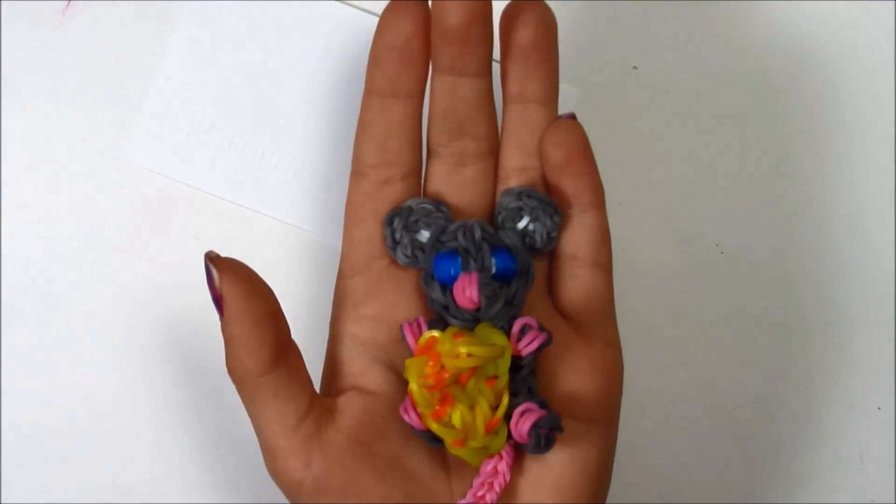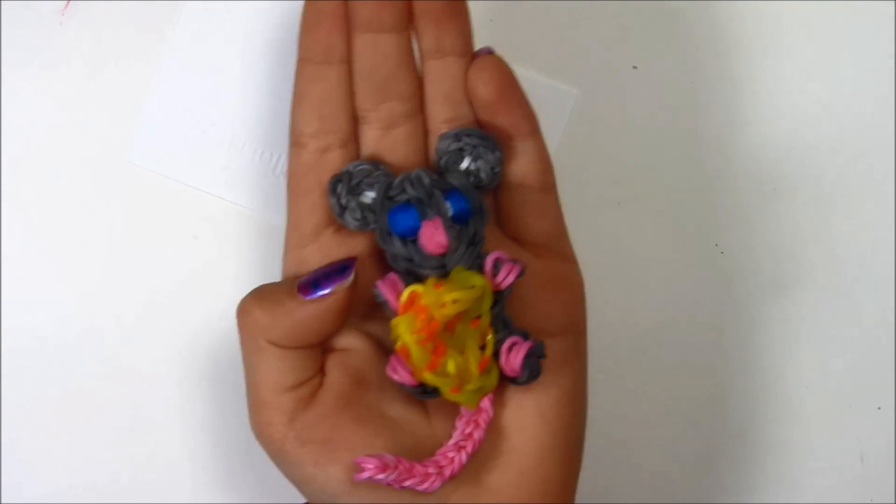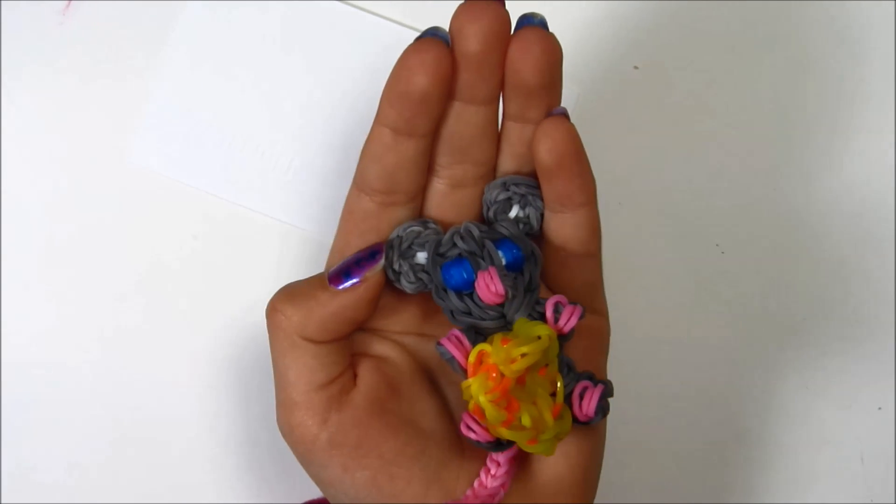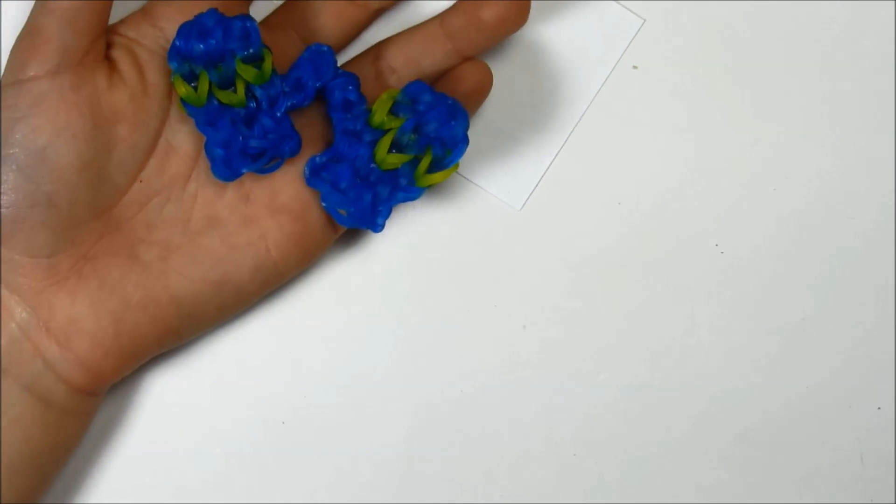This is her mouse charm with cheese, and I like how I put the cheese in its hands. These are the mittens. They have these thumbs and stripes.